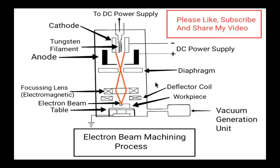Regarding the working principle: inside the vacuum chamber, vacuum is generated by the vacuum generation unit. The electron gun contains a tungsten filament, similar to the filament in an electric bulb. When current is passed through it, it gets heated to a temperature of about 2500 degrees Celsius. The real purpose of this filament is to act as a heater for the cathode.